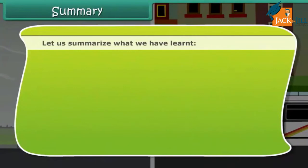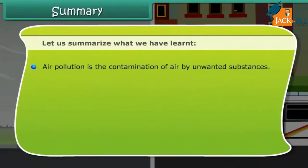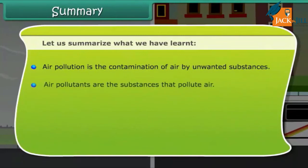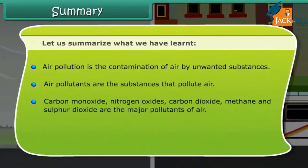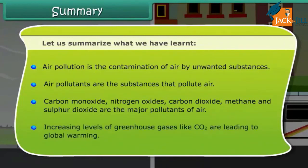In summary, air pollution is the contamination of air by unwanted substances. Air pollutants include carbon monoxide, nitrogen oxides, carbon dioxide, methane, and sulfur dioxide. Increasing levels of greenhouse gases like CO2 are leading to global warming.